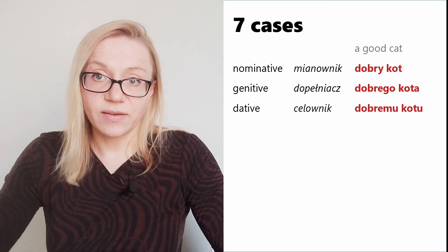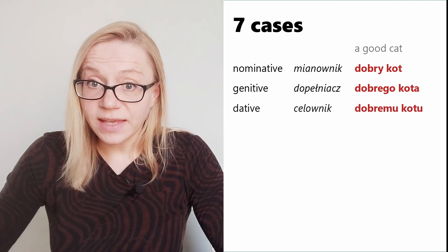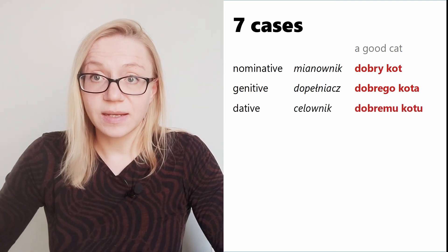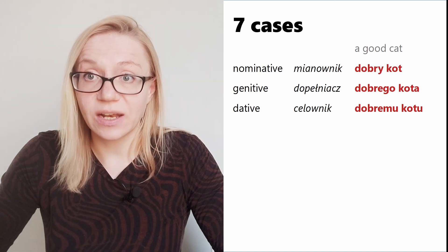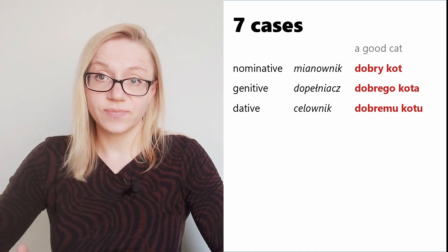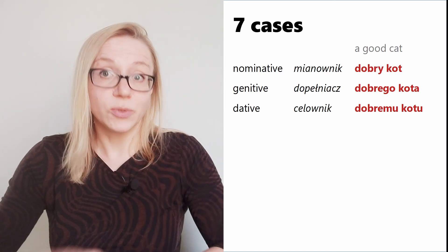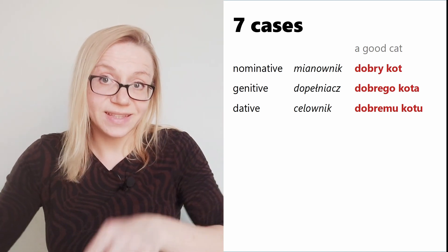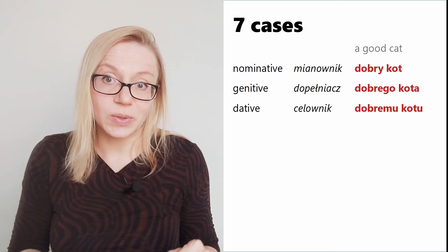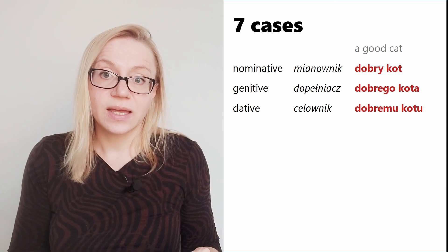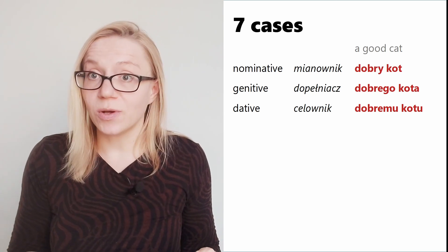Then we have the dative case, in Polish 'celownik'. The good cat in this case would be: 'dobremu kotu'.